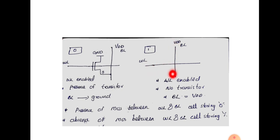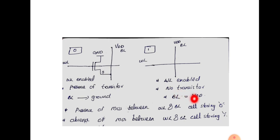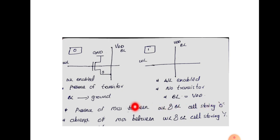the bit line voltage will be at VDD, so one is stored. Presence of transistor means bit line is connected to ground, and absence of transistor means bit line is connected to VDD. So, presence of MOS between word line and bit line means storing zero, and absence of MOS between word line and bit line means storing one.